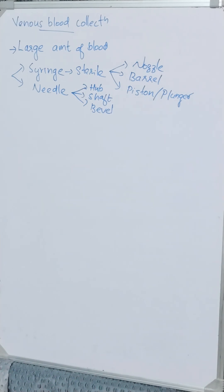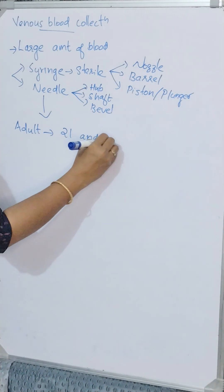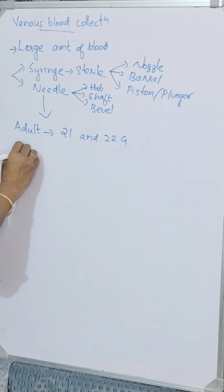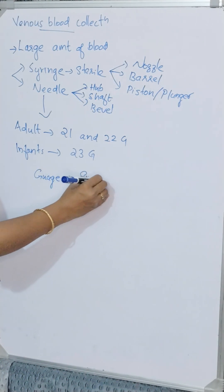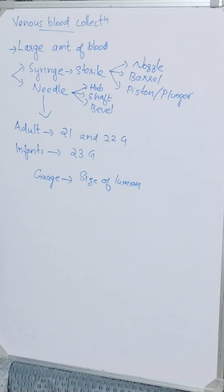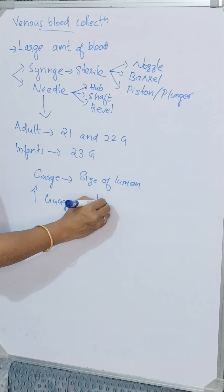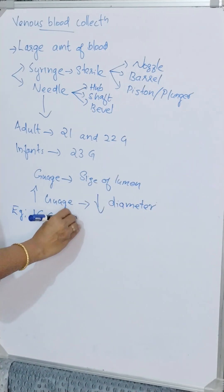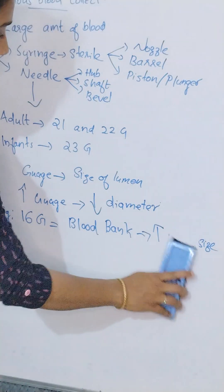Disposable needles are now common; they are made of plastic and are universally color coded depending upon their gauge size. The gauge size for adults is 21 gauge and 22 gauge. For infants, the gauge size is 23. The gauge size denotes the diameter of the lumen — higher the gauge size, lesser will be the diameter. For example, 16 gauge needles used in blood banks have a higher bore size but a lower gauge number.